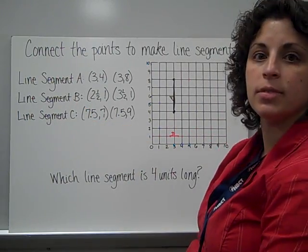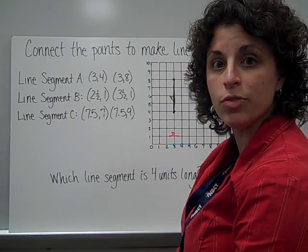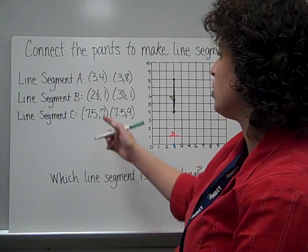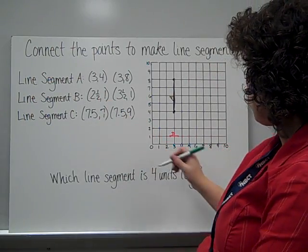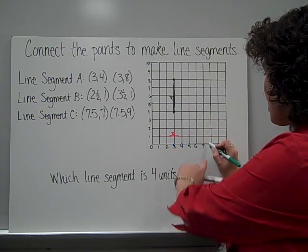All right. Next one, line segment C. 7 and 5 tenths, which, if you remember, 5 tenths is equivalent to 1 half. So I'm going to 7 and then halfway more. 7 and 1 half, 7.